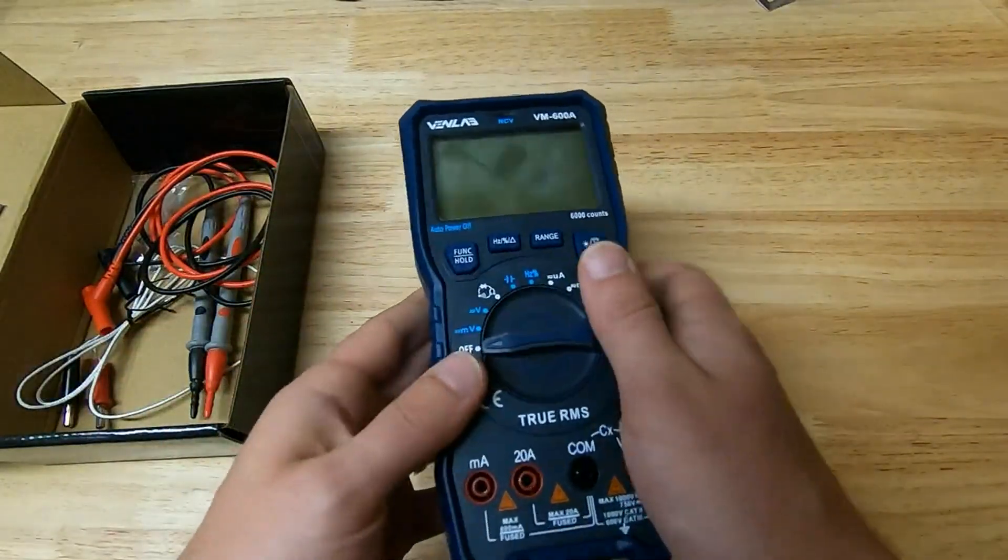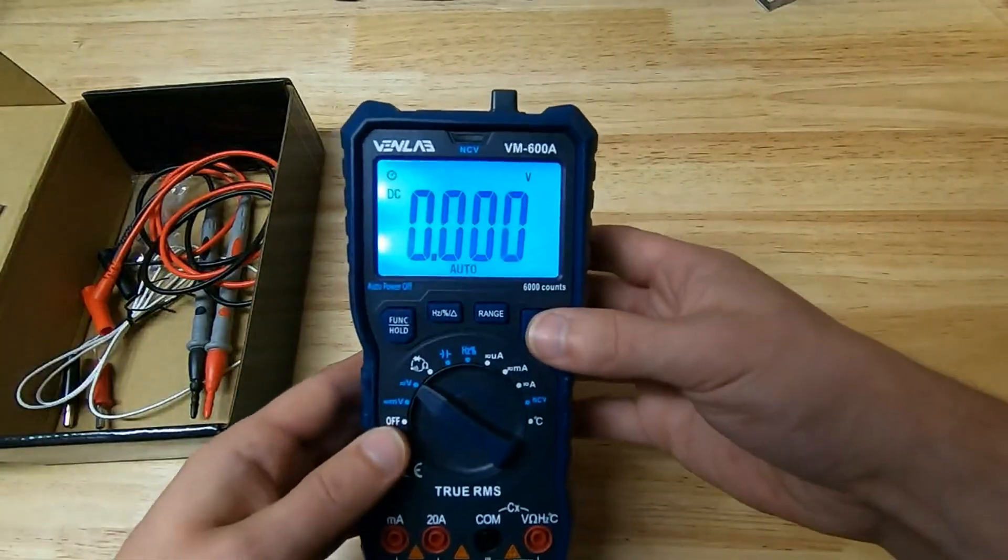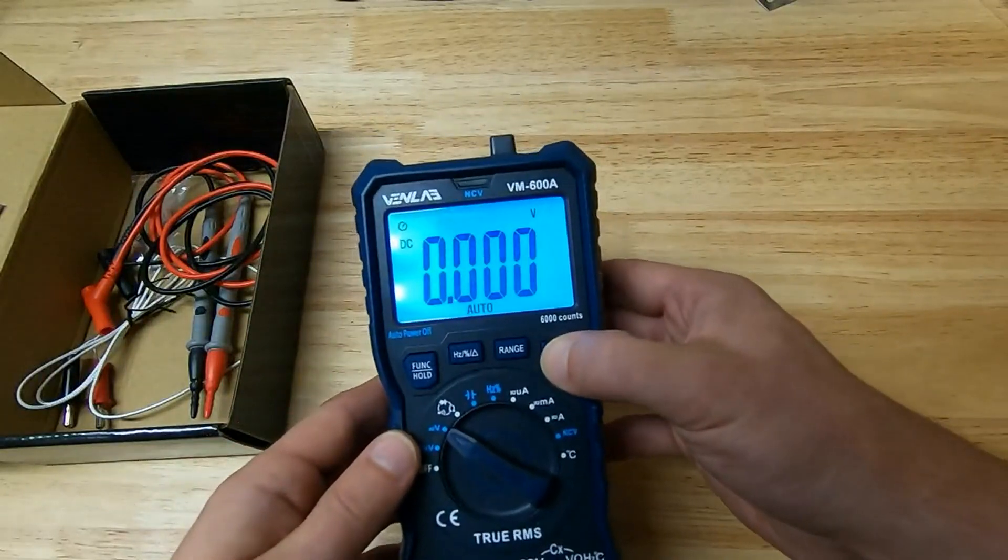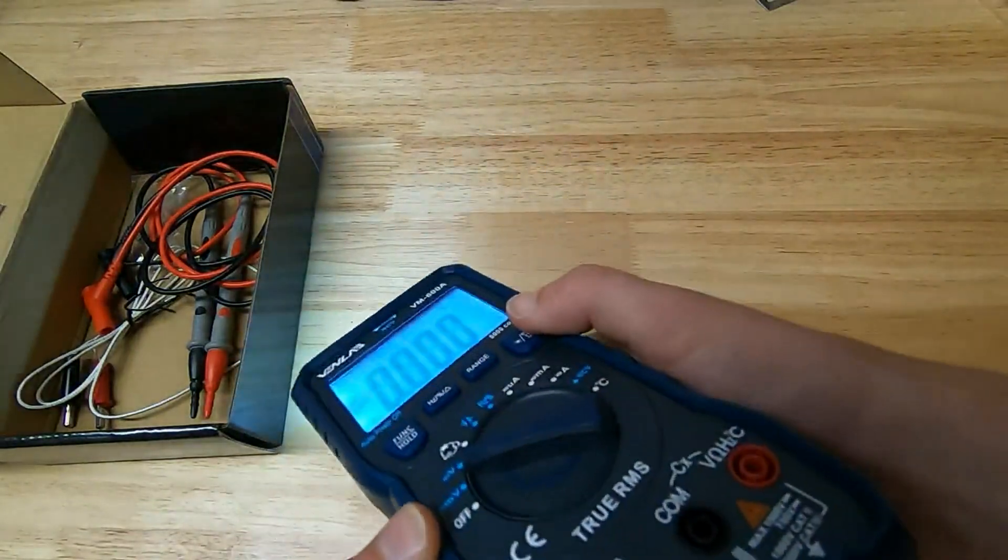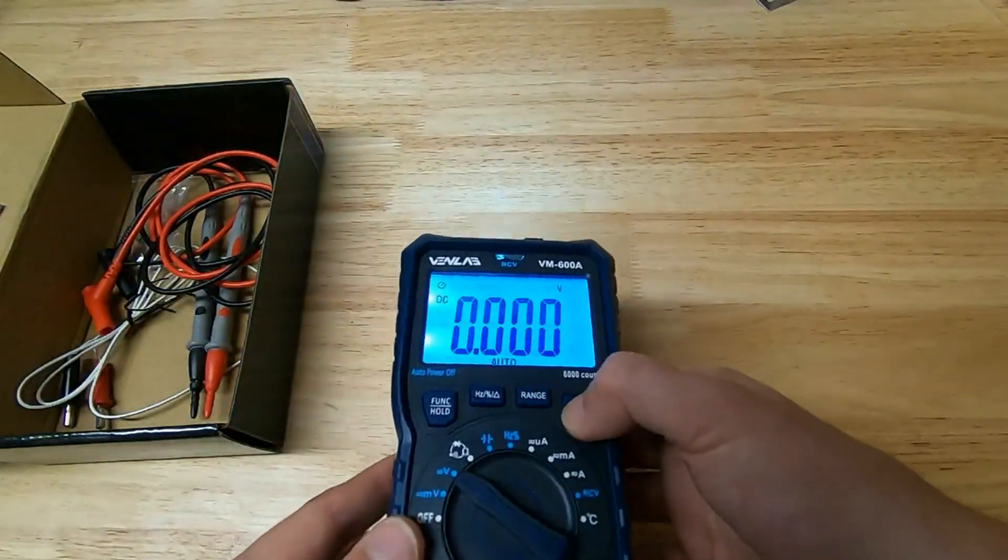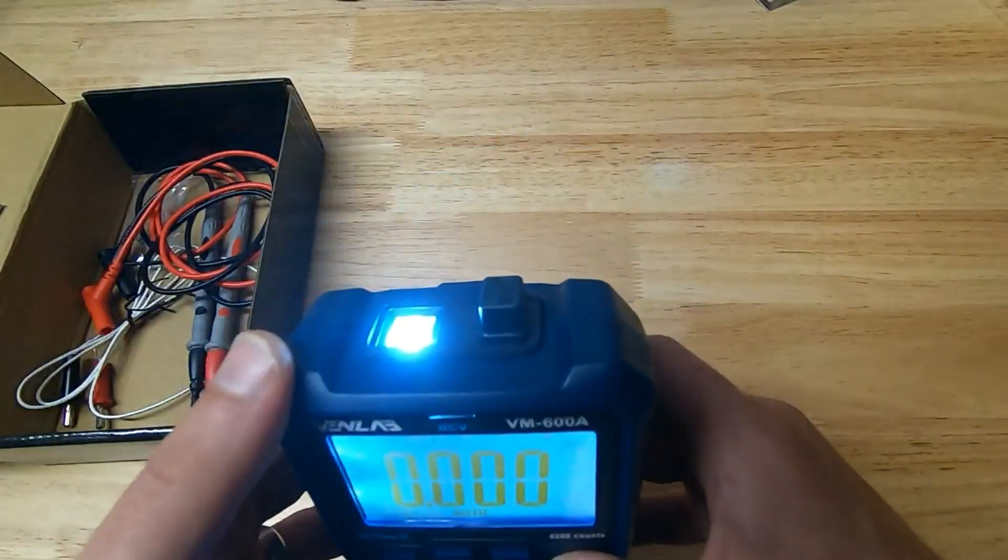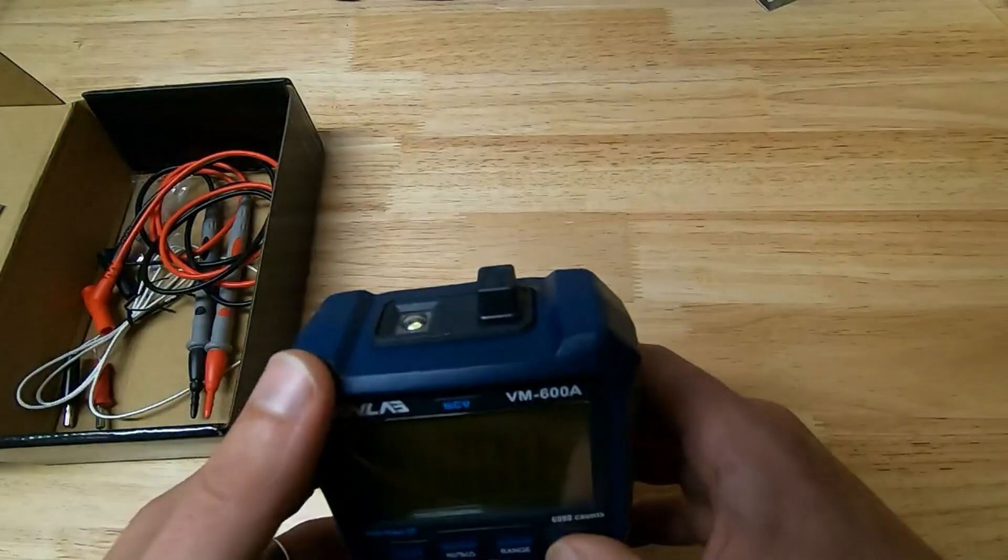Other features include having a backlight for easier reading in the dark, and if you hold that for a moment, you get a pretty bright flashlight. How do you turn it off? Hold it. There we go.